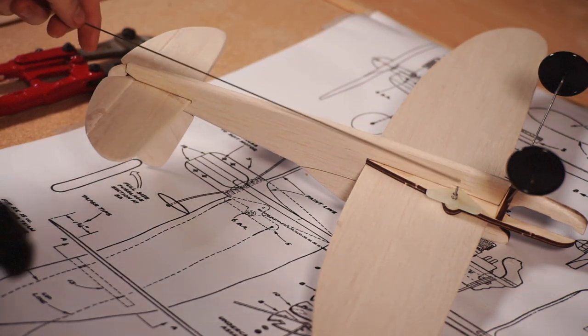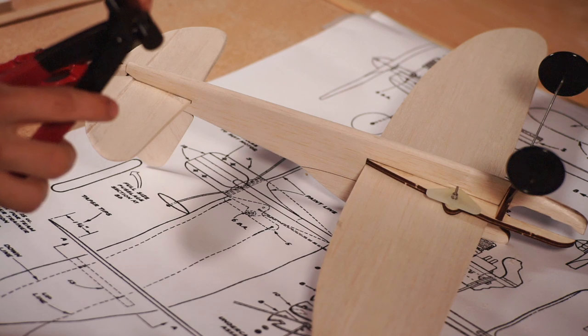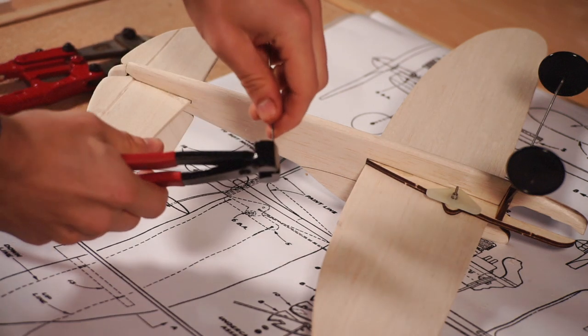Moving on to the control system, the included wire can be bent with the Z-bends so that it can fit through the outermost hole in the bell crank.